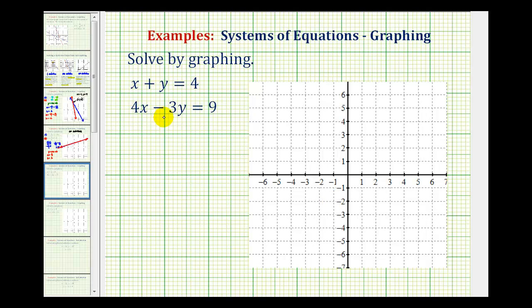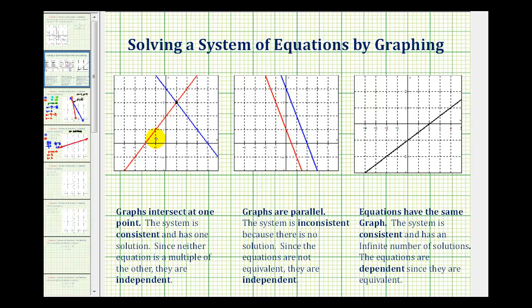Let's review what could happen when we graph two lines on the same coordinate plane. The first possibility is the two lines intersect, and since there's one point of intersection, we have one solution, and the solution would be the coordinates of the point of intersection.